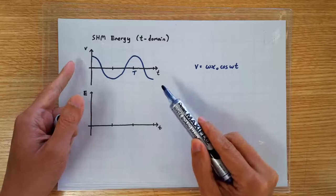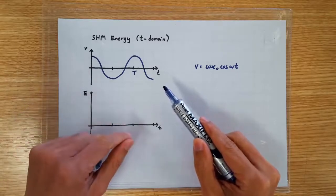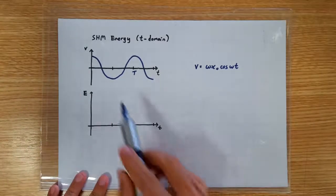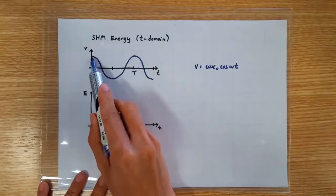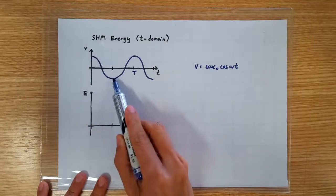The link is of course through the formula KE equals half mv squared. So in this graph, we see that the speed is maximum here, here, and here.